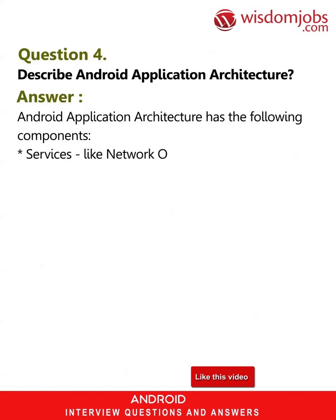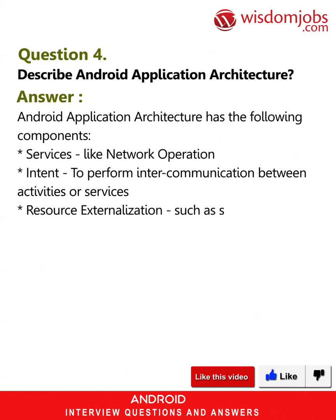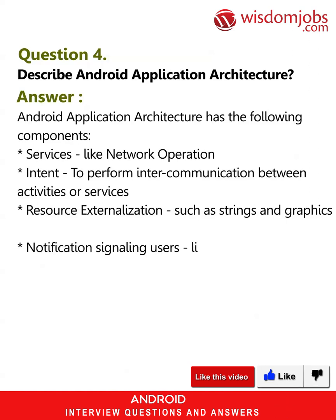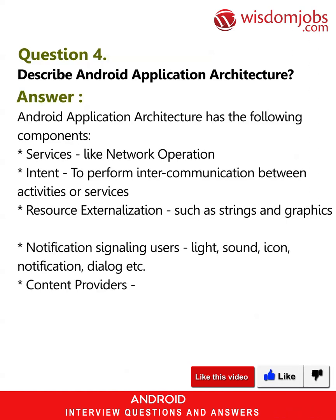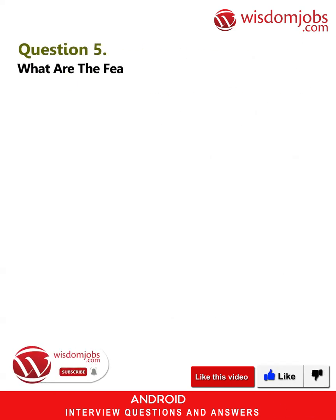Question 4: Describe Android application architecture. Answer: Android application architecture has the following components: services like network operation, intents to perform inter-communication between activities or services, resource externalization such as strings and graphics, notification signaling to users via light, sound, icon, notification dialogue, and content providers that share data between applications.